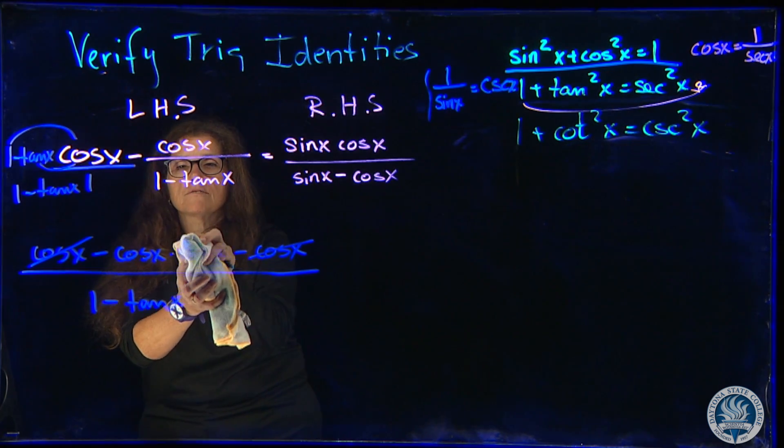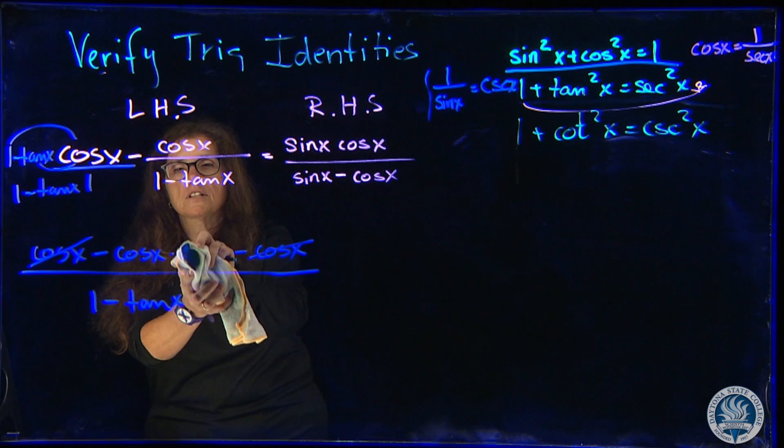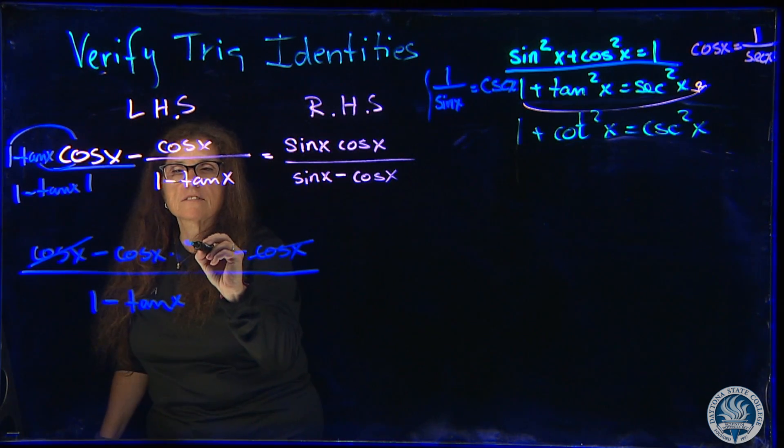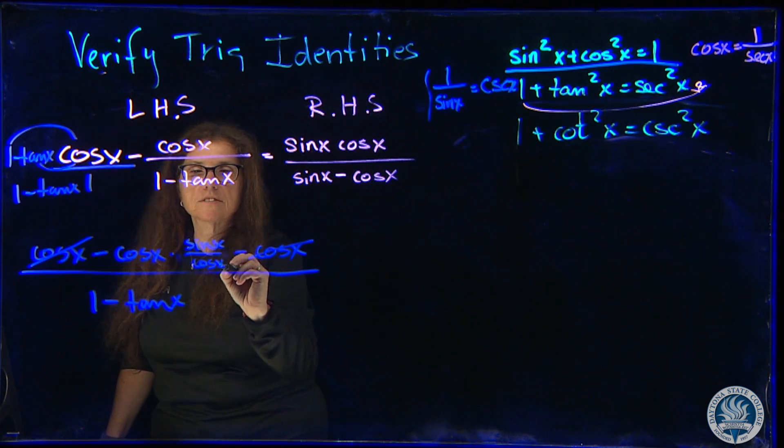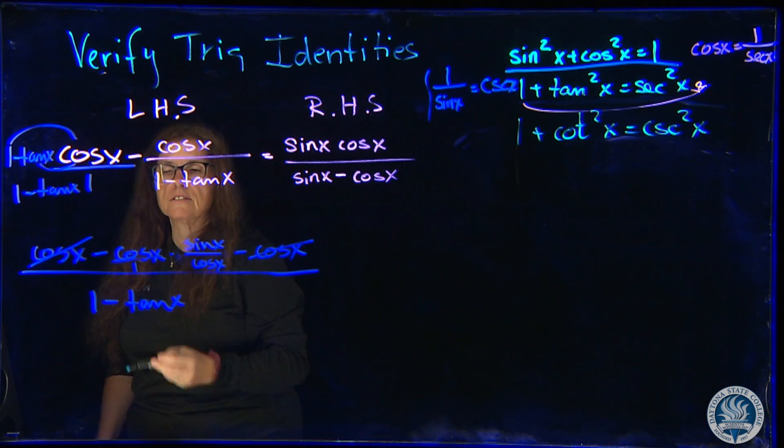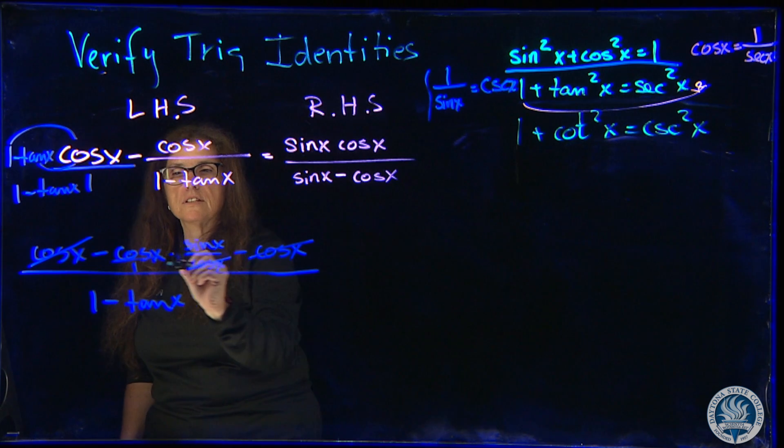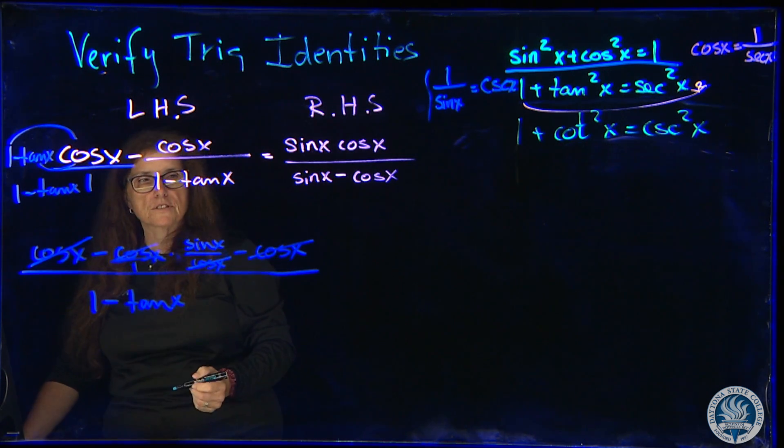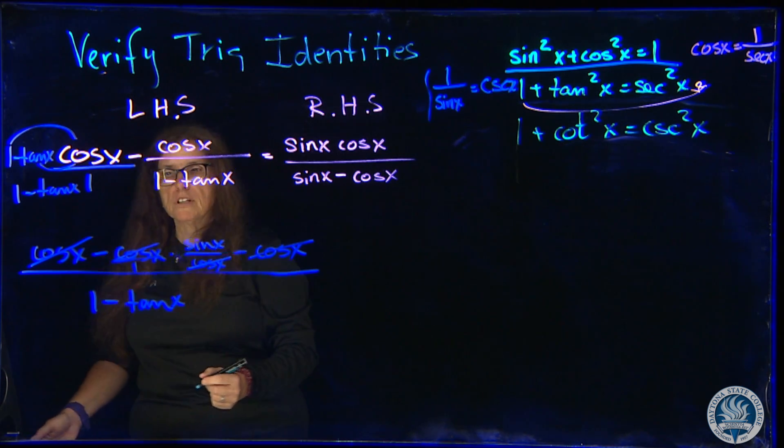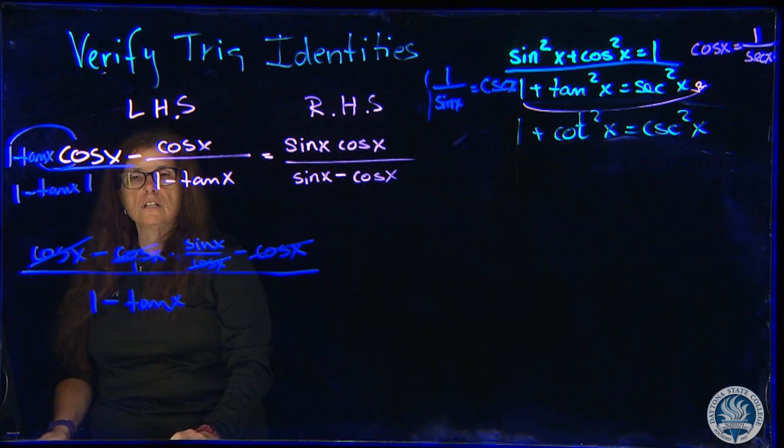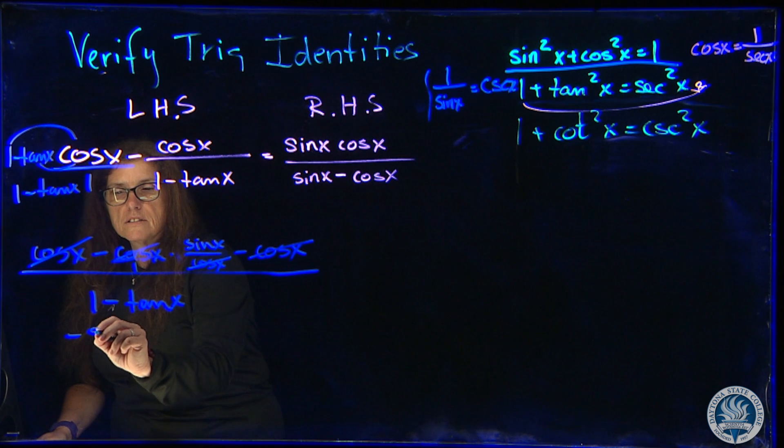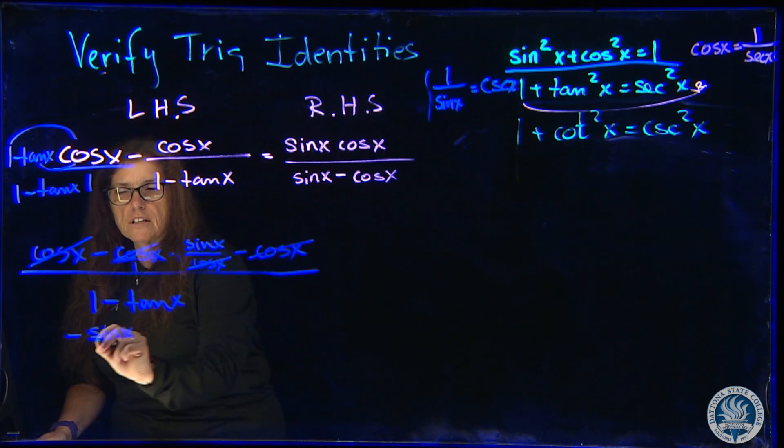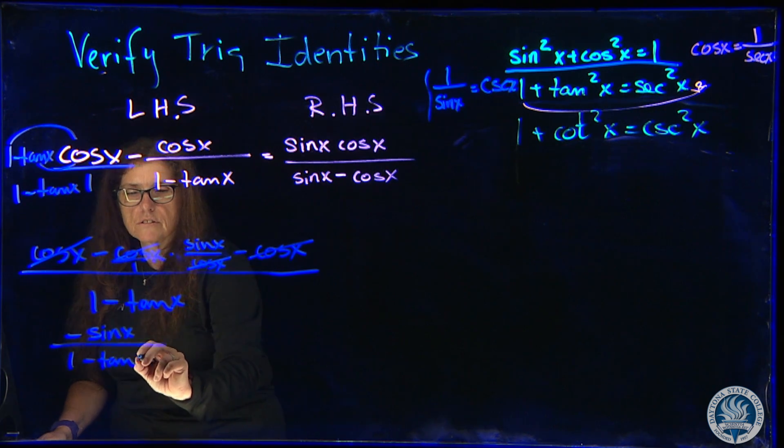Instead of tangent of x, I'm going to say sine of x over cosine of x. And this cosine is over 1. You can see that the cosine reduce as well. So what we're really left with in the numerator is minus sine of x over 1 minus tangent of x.